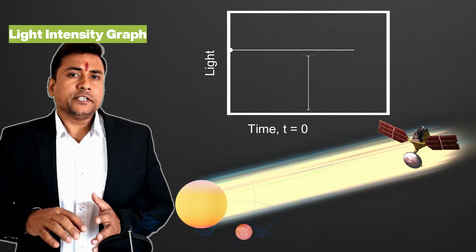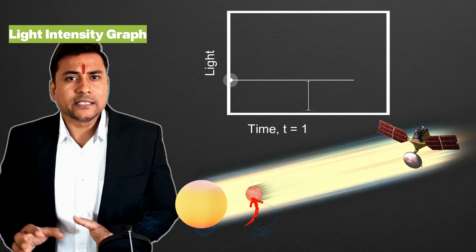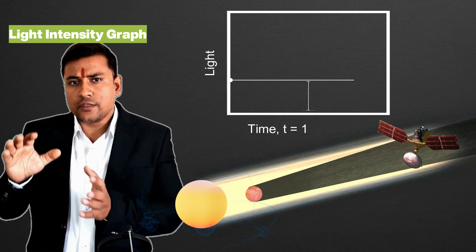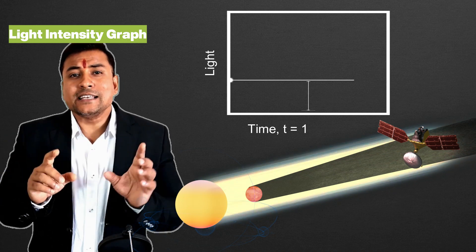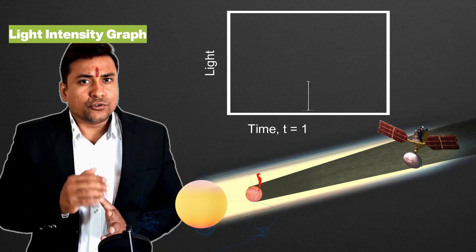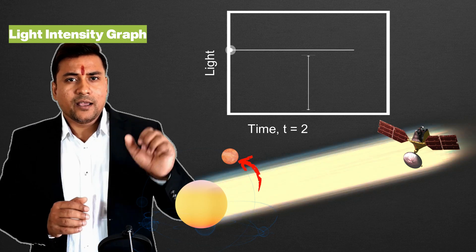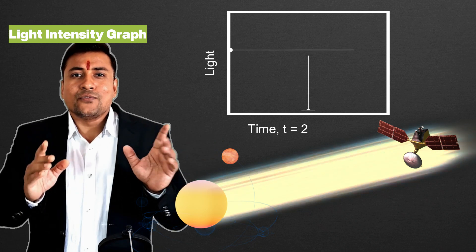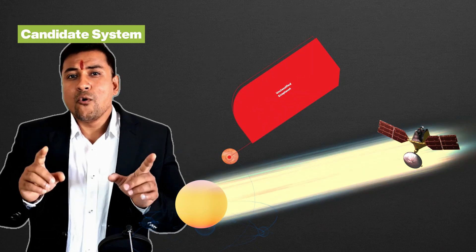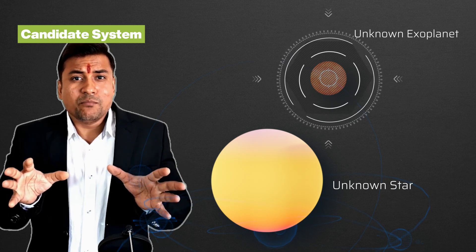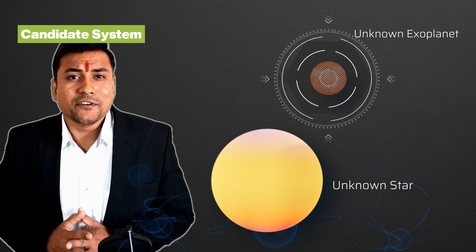At a different point in time, T1, when this unknown planet takes this position, it partially eclipses or obscures the star, and due to this the light intensity drops. At another time, T2, when this planet moves away, the light intensity rises back to its normal value. This means that there is an unknown planet orbiting around the star, and this star-and-planet system becomes the candidate system for further investigation.